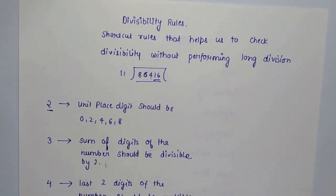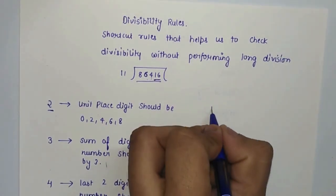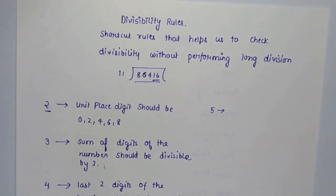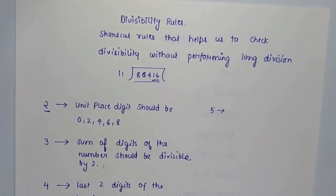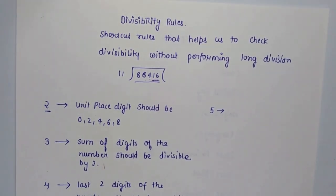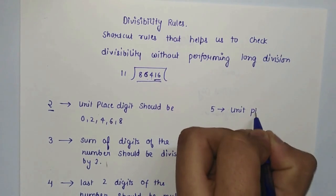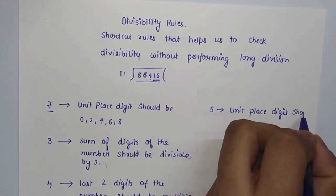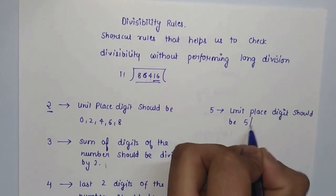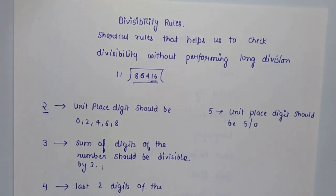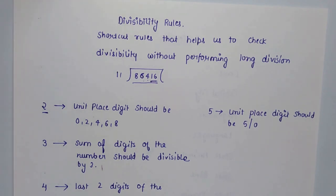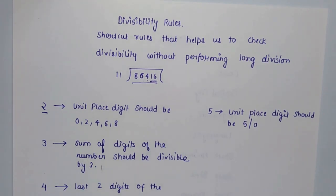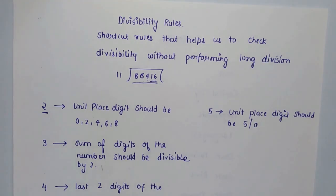The divisibility rule for 5 is that the unit place digit should be 5 or 0. If we look at the multiplication table of 5 — 5, 10, 15, 20, 25, 30 — we can see the pattern: the unit place digit is always either 5 or 0. So this is the divisibility test for 5.